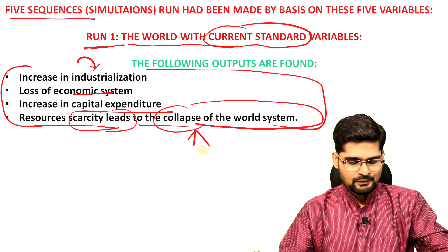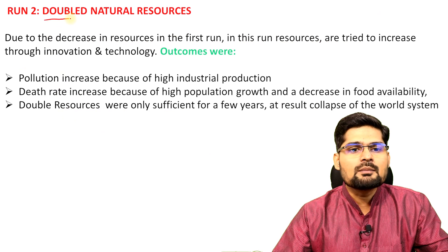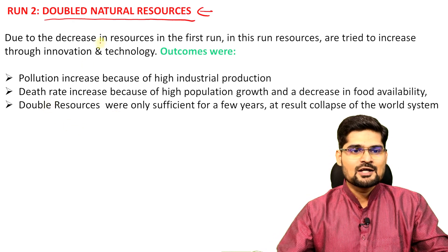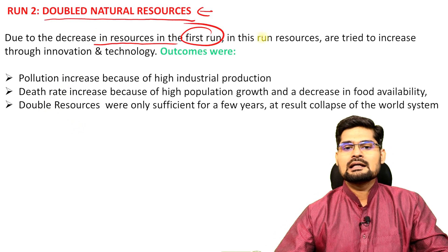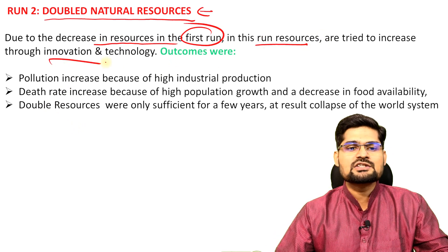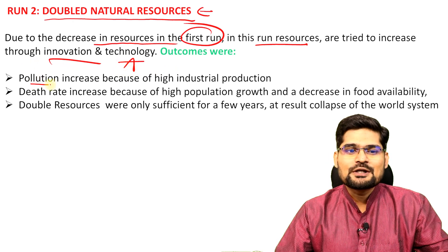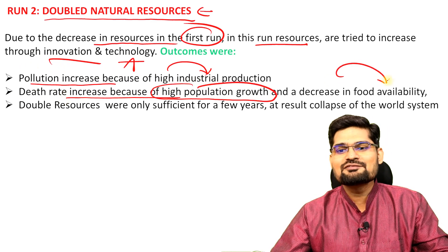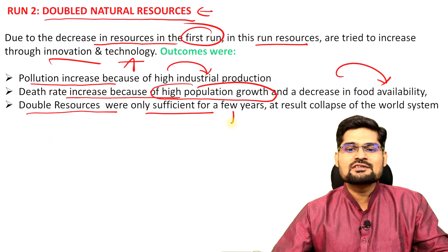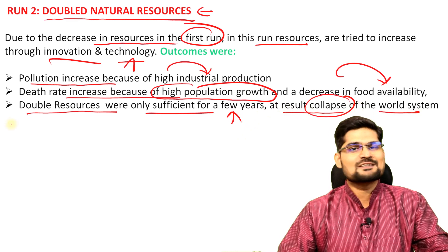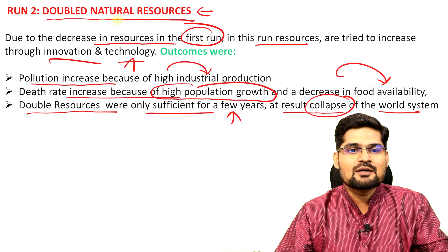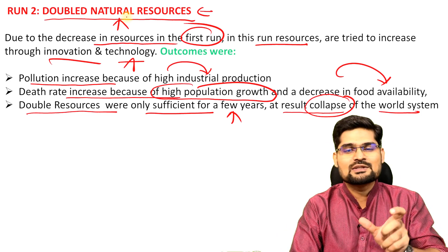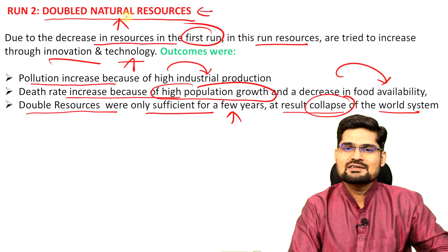The second simulation assumed that if we double the natural resources using innovation and technology, what happens? The outcomes were: pollution increased because of high industrial production; death rate increased because of high population growth and decrease in food availability; and double resources were only sufficient for a few years. Again, the result was collapse of the world system eventually — even doubling natural resources still leads to collapse.